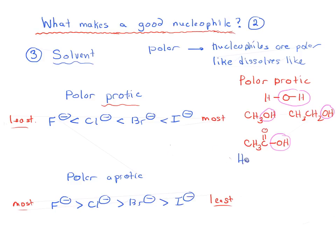That is really the crux of the issue here — it's hydrogen bonding or no hydrogen bonding. If you have hydrogen bonding, you're going to have the effect where fluoride is less nucleophilic than chloride, less than bromide, less than iodide. If you don't have hydrogen bonding, it's going to be the opposite. So hydrogen bonding is the key.